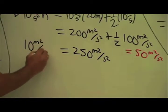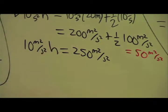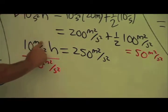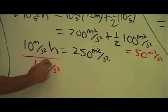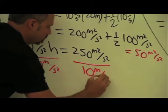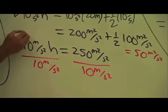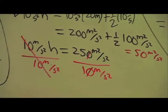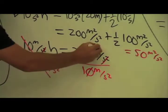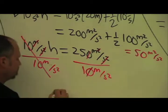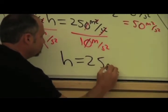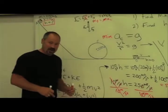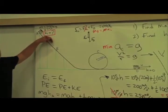Over here we have 10 m/s² times H. Dividing both sides by 10, the units work out so that the seconds squared cancel and we're left with meters. And you can see what we have left is a height of 25 meters. So when designing your roller coaster with a loop of 10 meter radius, make sure it starts off at a height of 25 meters.